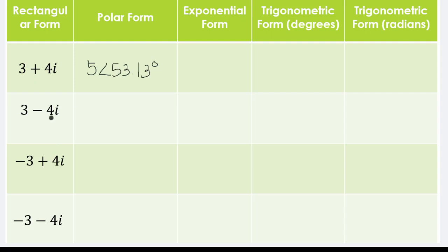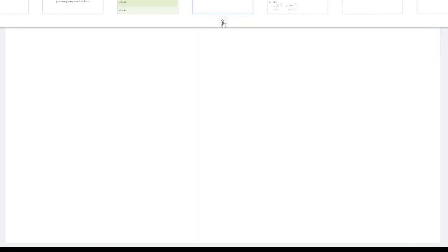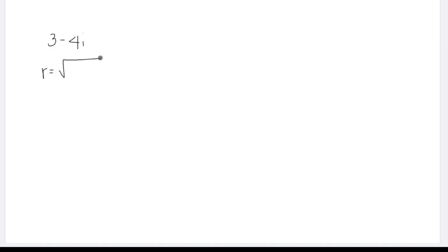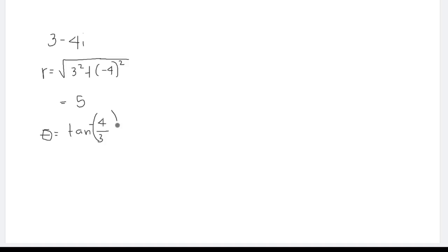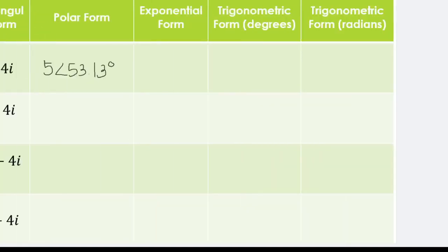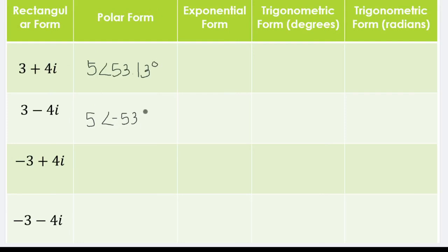For example B, that's 3 minus 4i. We get the same value of R: the square root of 3 squared plus negative 4 squared, which is also 5. For theta, that is arctan of negative 4 over 3, which equals negative 53.13 degrees. So 3 minus 4i in polar form is 5 at an angle of negative 53.13 degrees.